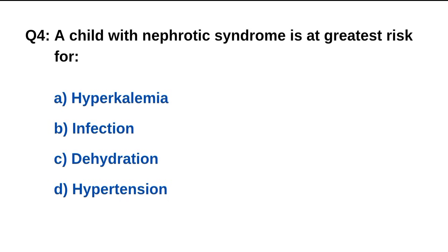Question number 4. A child with nephrotic syndrome is at greatest risk for what? The right option is B: Infection.